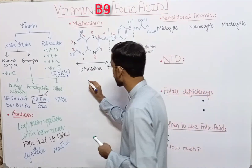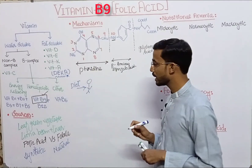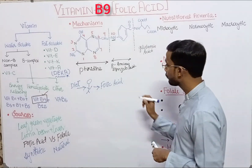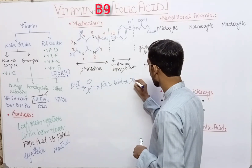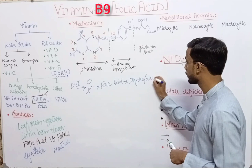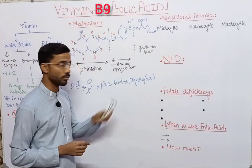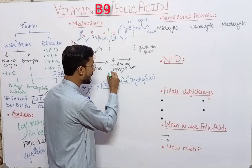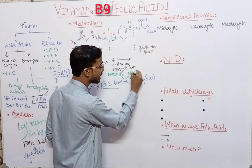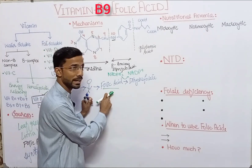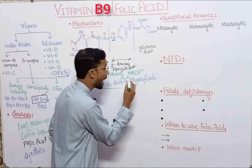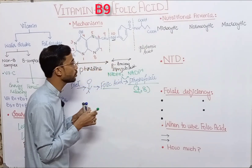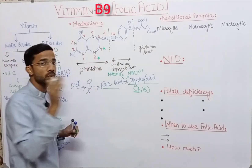Here you can see a person who takes a diet containing folic acid. Folic acid in the body will first convert into dihydrofolate. In this conversion, two hydrogens are added to folic acid — NADPH2 converts to NADP positive. These two hydrogens are added at positions seven and eight of the pteridine ring.